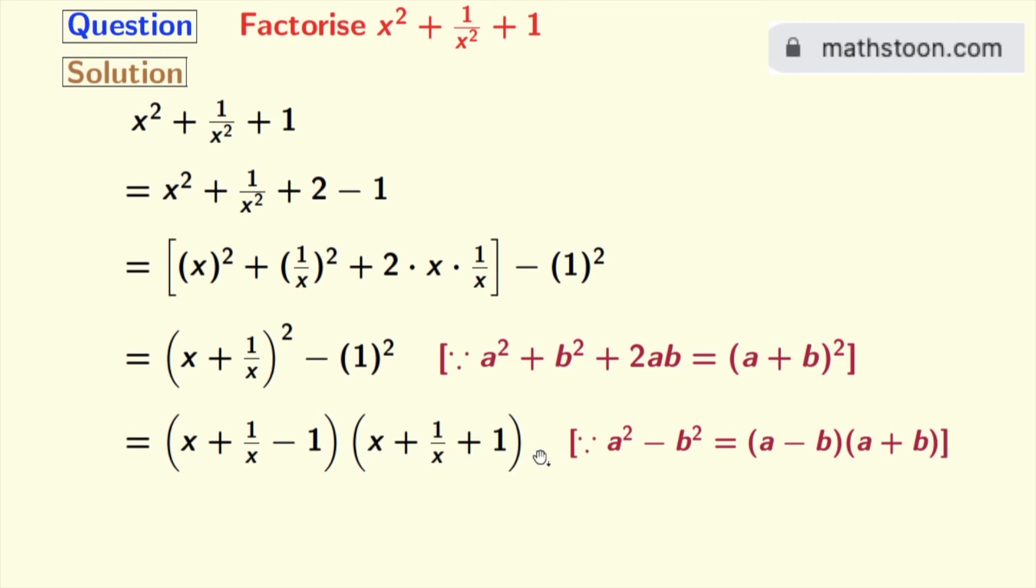So finally we have x square plus 1 by x square plus 1 as the product of these two expressions, and this is our final factorization.